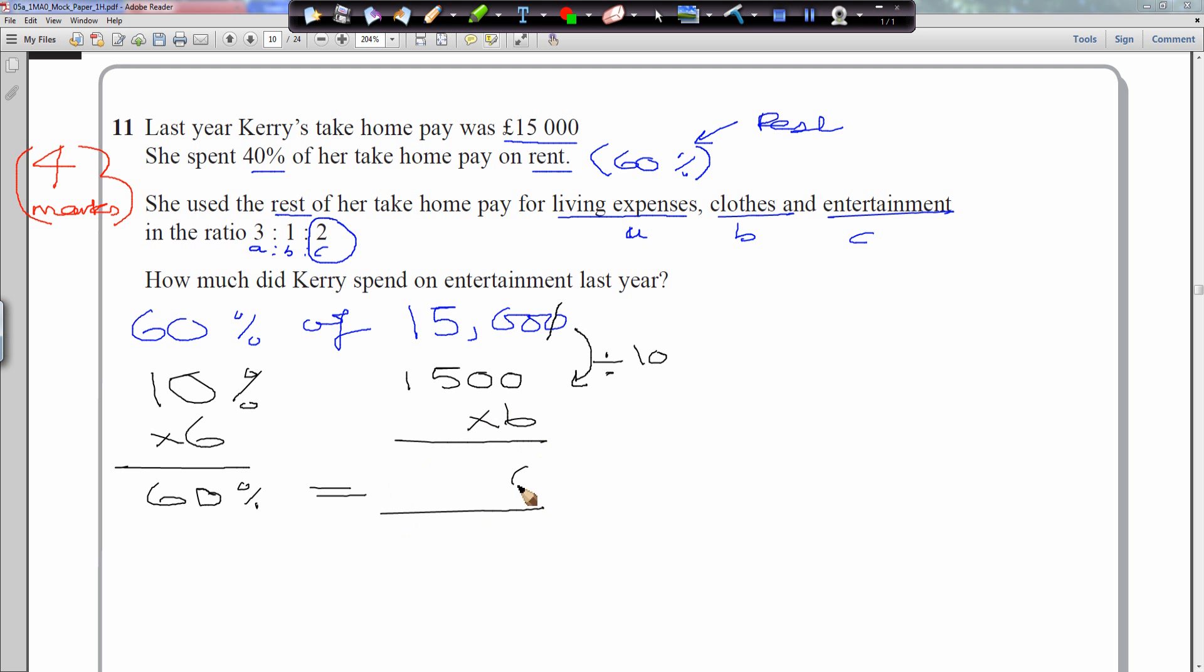So $1,500 times by 6. 0 times by 6 is 0. 0 times by 6 is 0. 5 times by 6 is 30. And 1 times by 6 is 6, plus 3 is 9. So she spent 40% on her rent and she's got 60% left, which is $9,000.